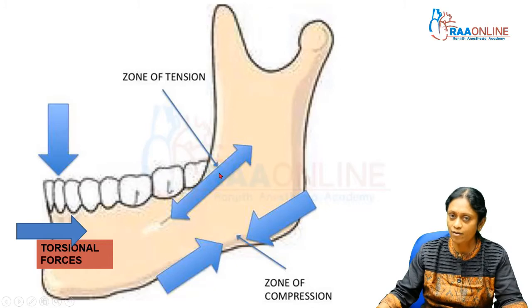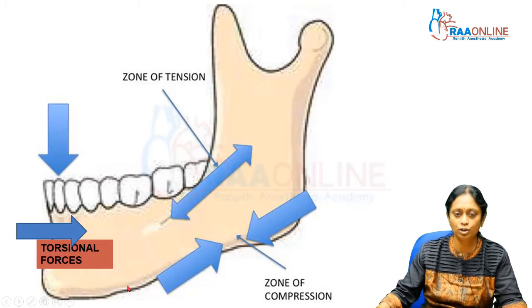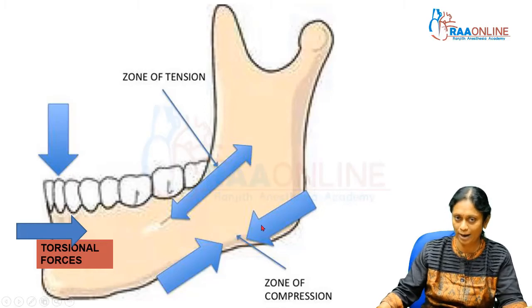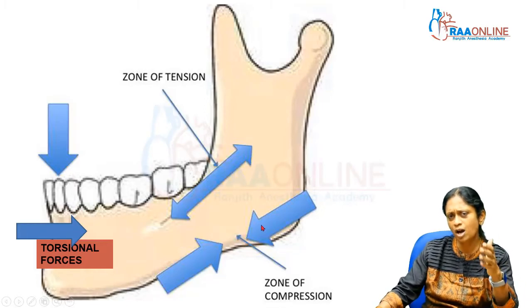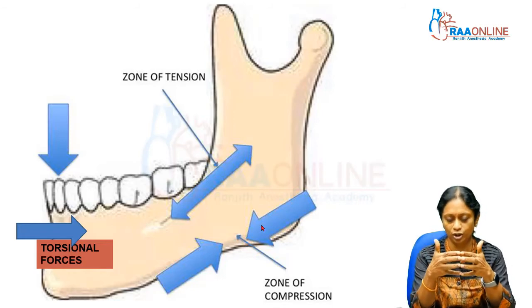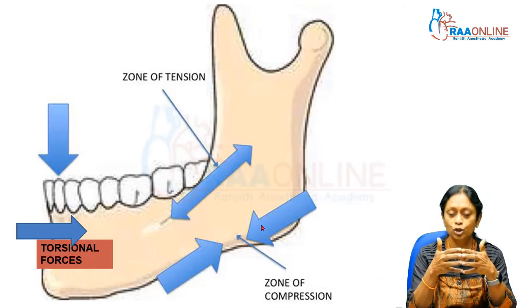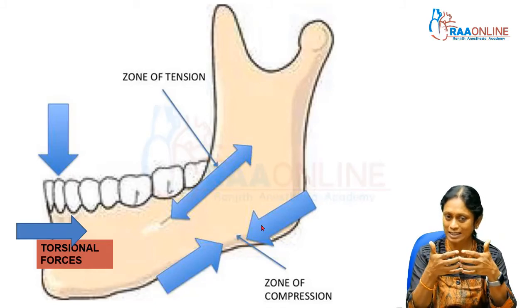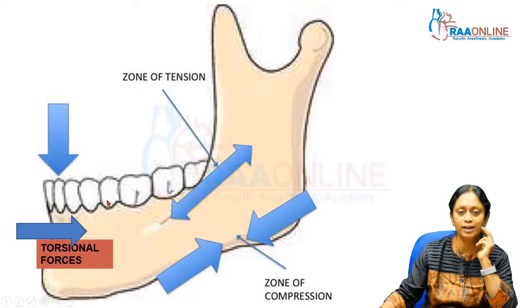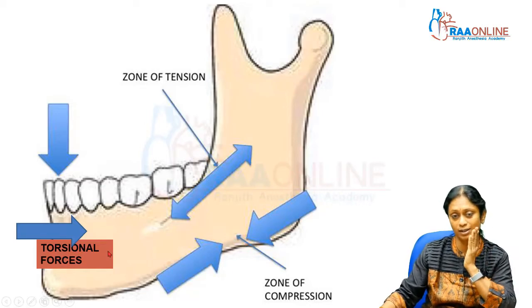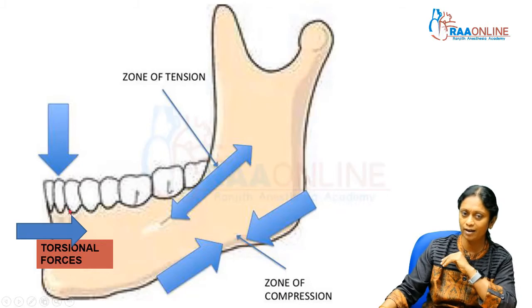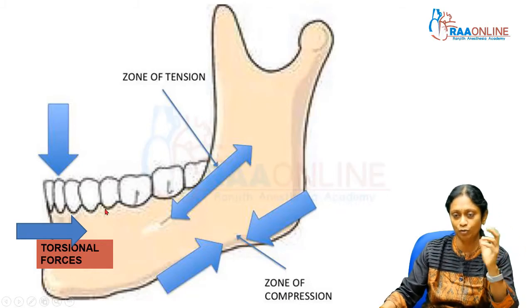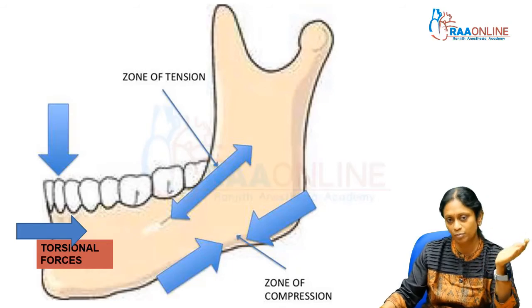There is a zone of tension acting along the dental alveolar segment, and a zone of compression acting on the lower border of the mandible. Because this is a horseshoe-shaped structure — not a long bone — you will have some rotational forces where the mandible is turning. From the canine on one side to the canine on the opposite side, we have torsional or rotational forces. So we have a zone of tension, a zone of compression, and torsional forces acting on the mandible.